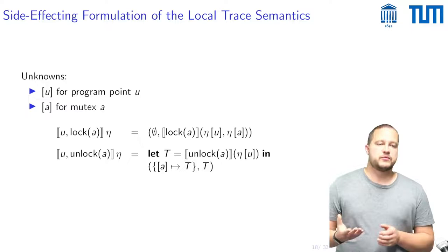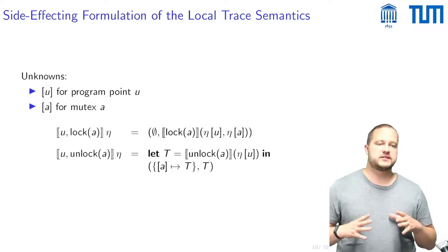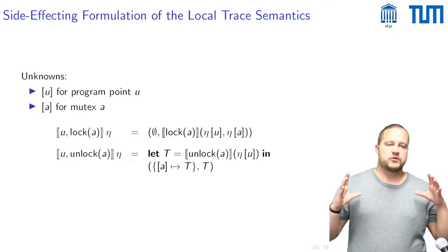Then what does the right hand side look like for locking and unlocking? It looks somewhat like this. So on a lock A on top of the traces that reach the program point before this lock A is executed one also takes the traces into account that were stored at this unknown A and one then incorporates some of them and combines them.